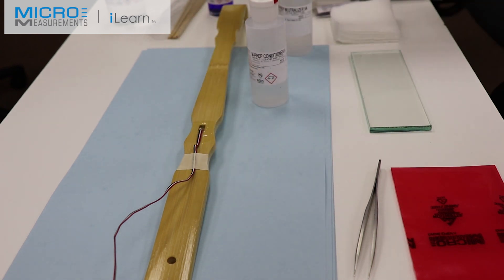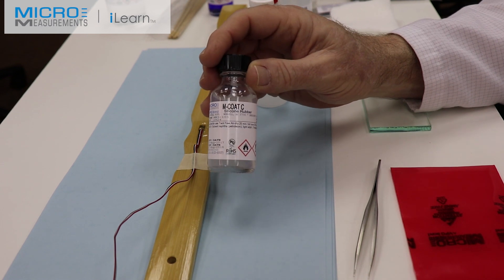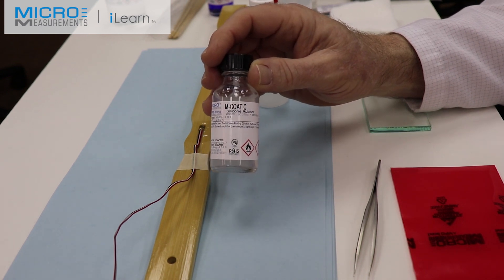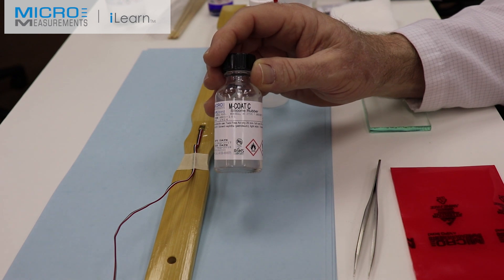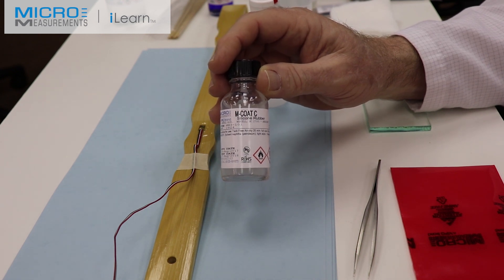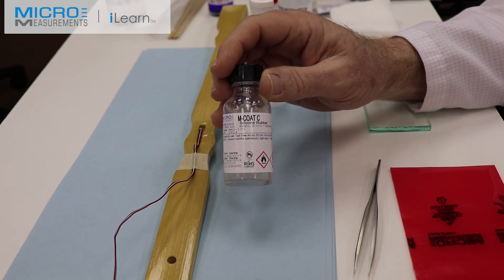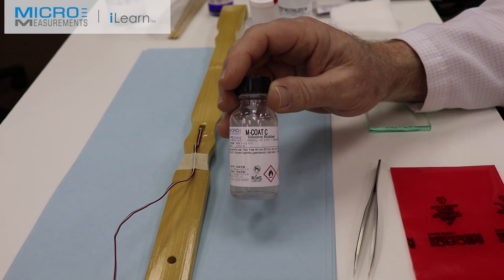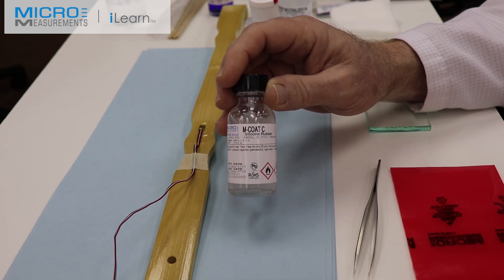And finally, as an environmental protection because of the possible elongations and the lack of reinforcement that we want on this particular application, we're using our M-Coat-C. It's a room temperature vulcanizing rubber which is benign and doesn't affect the strain gauge electrically or mechanically.